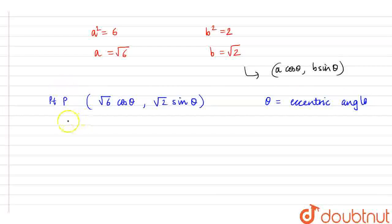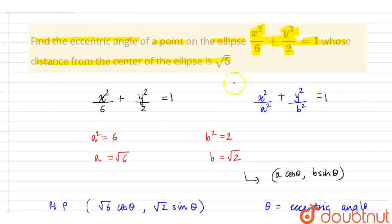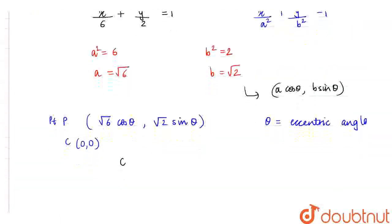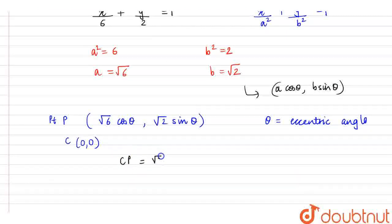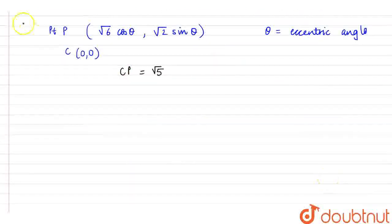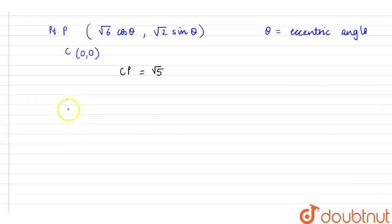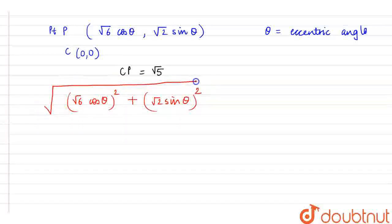Now, using this, we know that the center will be (0, 0) and it is given to us that the distance from the center of the ellipse is root 5. So this means CP equals root 5. Using this, we can find that it will be root of (root 6 cos theta whole square plus root 2 sin theta whole square) equals root 5.